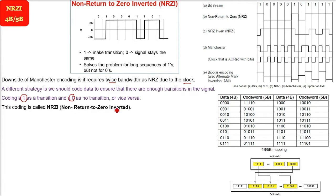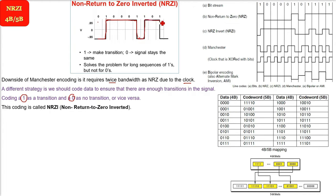Non-Return to Zero Inverted. Here is an example. Wherever you see a 1, make a transition. Wherever it is 0, just make a straight line. So for each 1 you make a transition, and for each 0 you keep it straight. This is called NRZI.